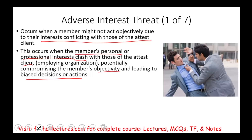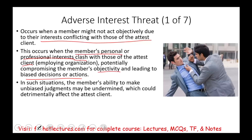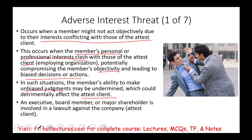If you have this adverse threat — some sort of a problem with either the attest client or your organization — you have to be aware of it, because what's going to happen is you may not be able to make unbiased judgments. Your judgment could be undermined and that would detrimentally affect the attest client as well as your company. An example would be an executive, board member, or major shareholder involved in a lawsuit against the company, or if you are auditing a company and you have a lawsuit — either you sued the client or the client is suing you. That's an adverse interest threat to your objectivity, independence, and judgment.